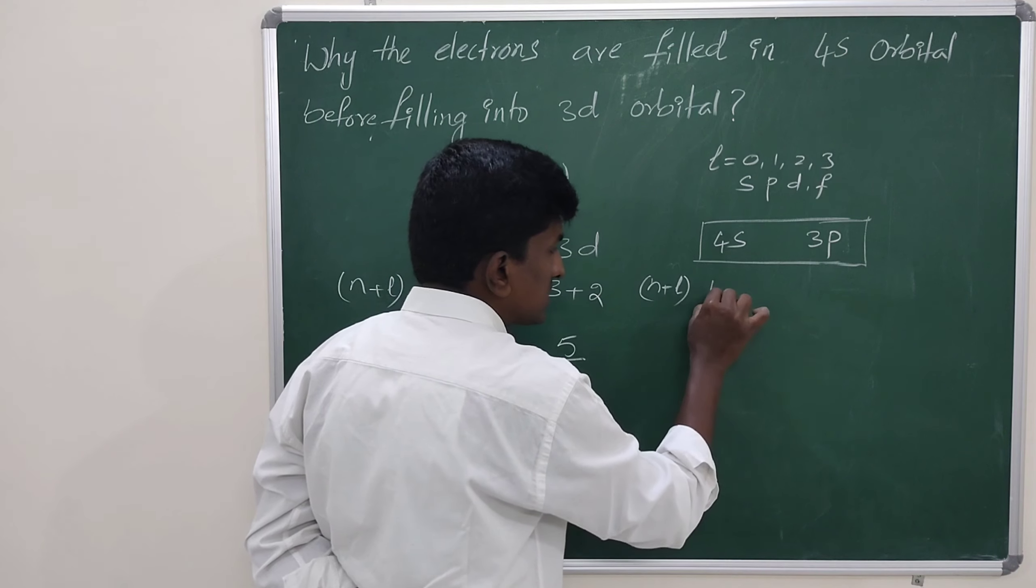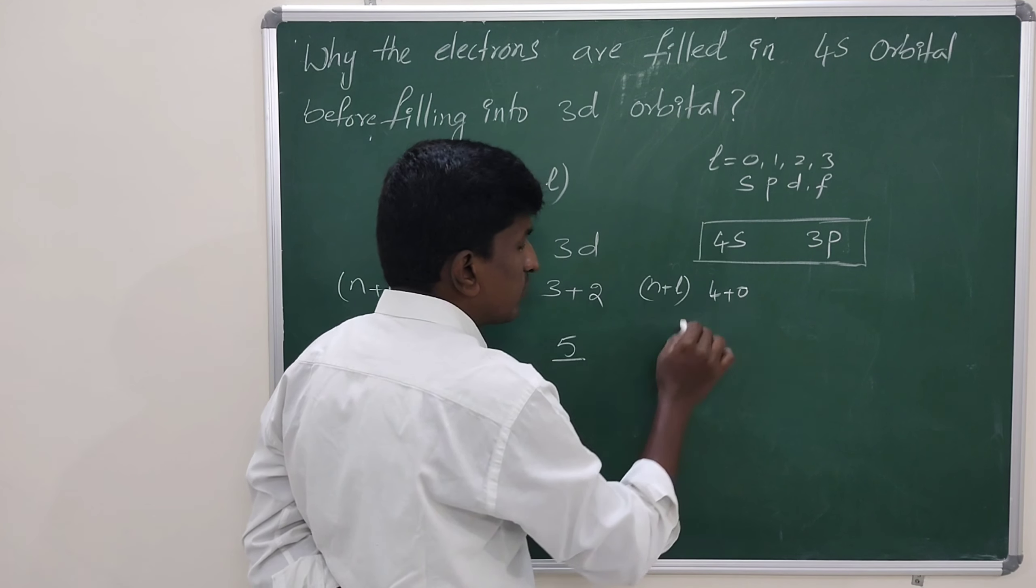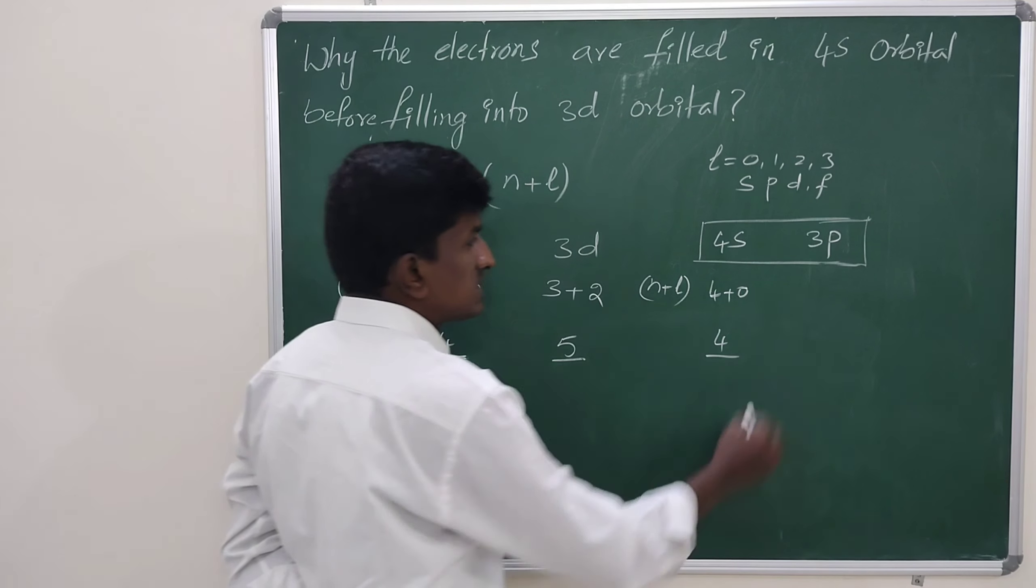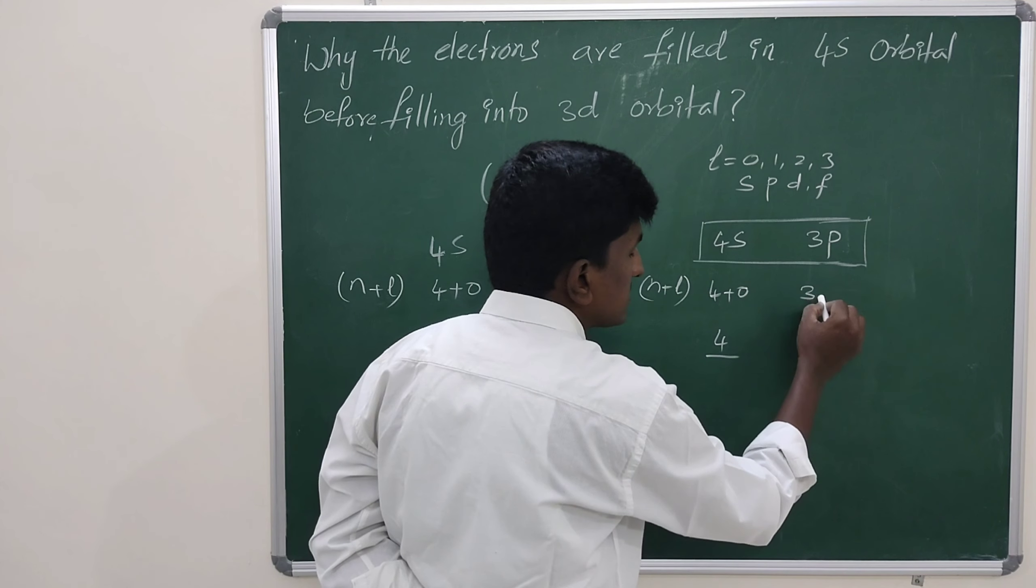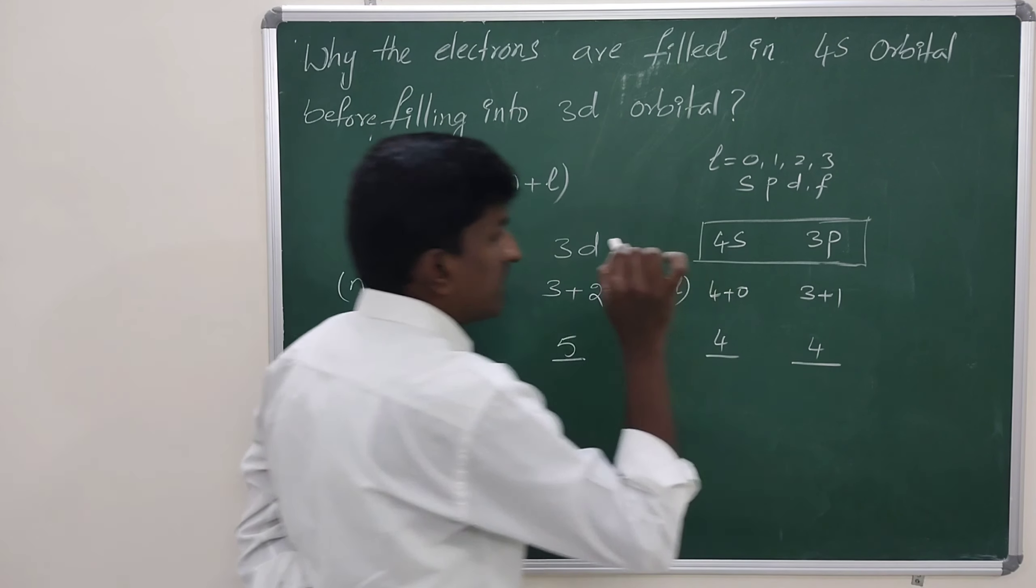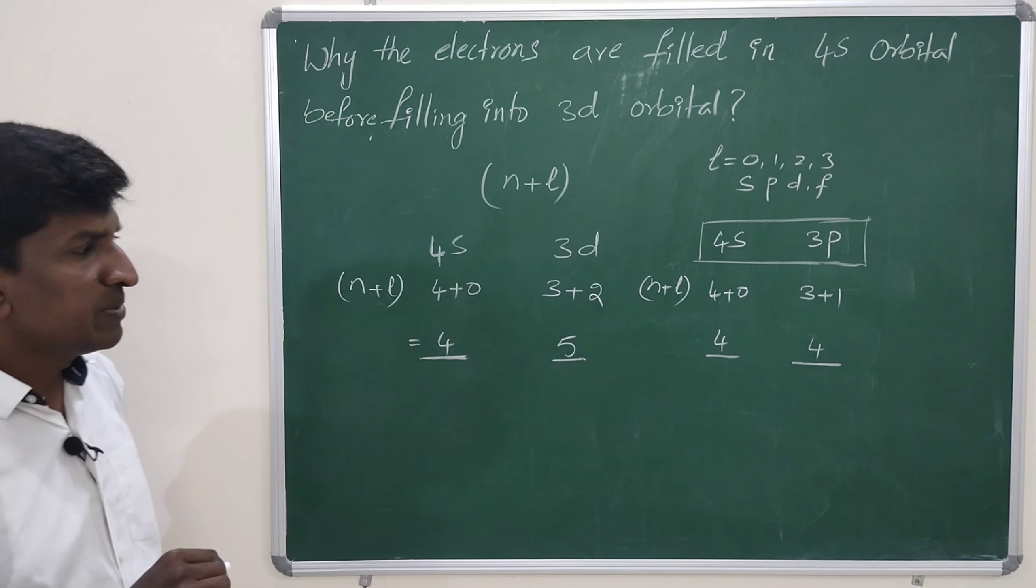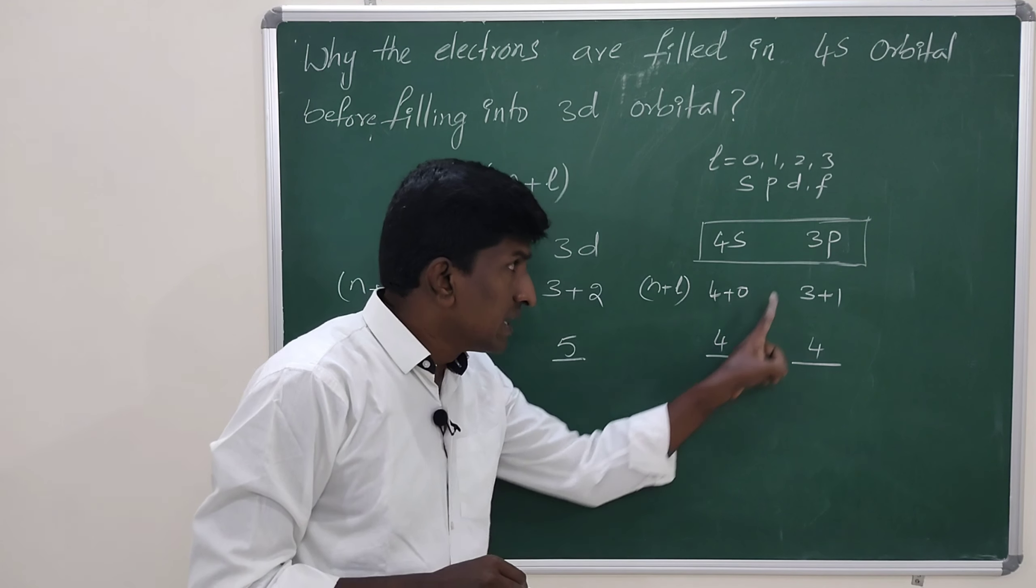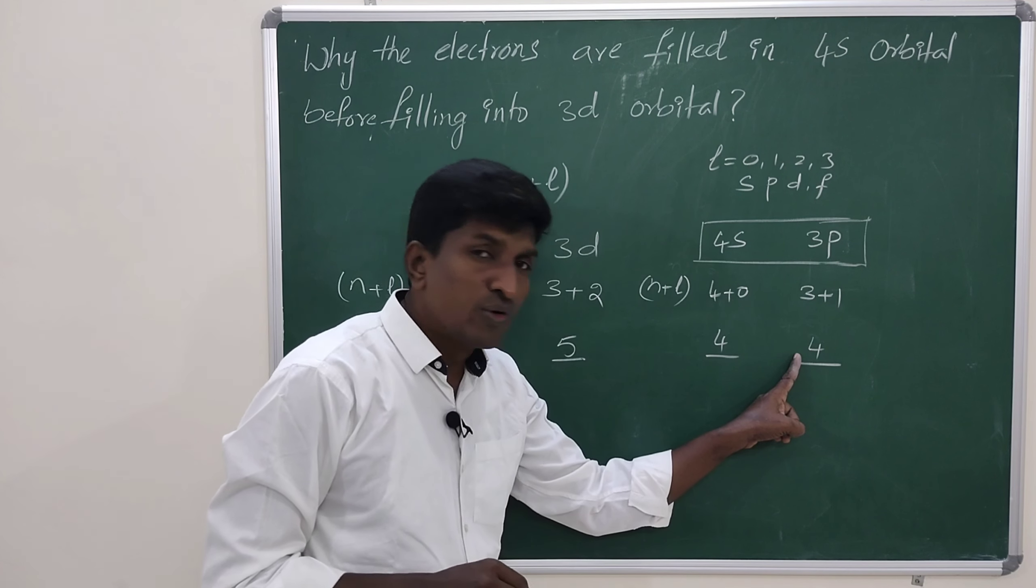For 4s as we discussed, for 4s it is 4 plus 0, which is 4 units. Whereas, for 3p it is 3 plus 1. Then, the n plus l value for the 3p also 4, and 4s having 4 units and 3p also having 4 units.